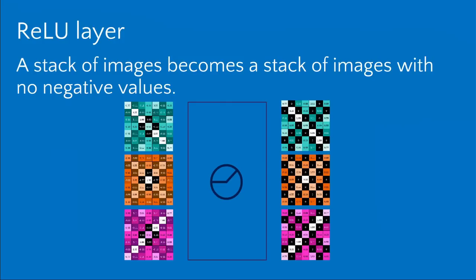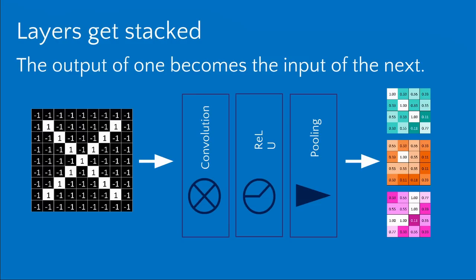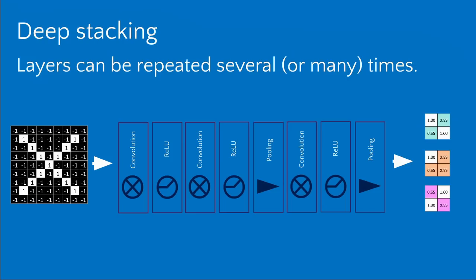A stack of images becomes a stack of images with no negative values. You can notice that the output of one layer looks like the input to the next — they're always arrays of numbers, and an image and an array of numbers are the same thing. So you can take the output of the convolution layer, feed it through the rectified linear unit layer, feed that through the pooling layer, and you have something that had all these operations done to it. You can do this again and again — like a Scooby Doo sandwich of all these different layers in different orders.